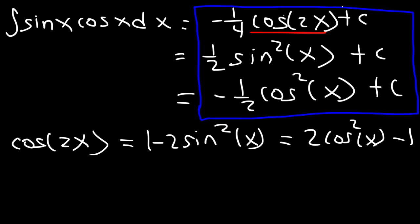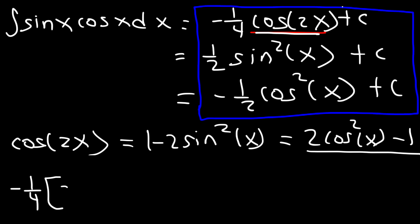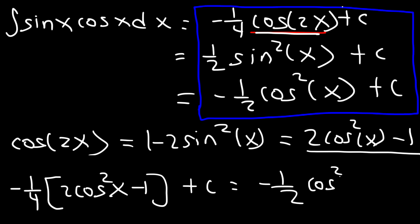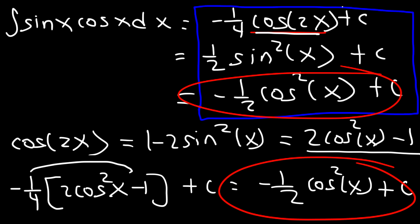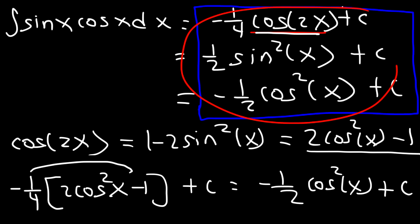Now let's replace cosine 2x with 2 cosine squared x minus 1. So instead of writing negative one-fourth cosine 2x, we insert that expression plus C. Negative one-fourth times 2 gives negative one-half cosine squared x, and negative one-fourth times negative 1 is positive one-fourth, plus the constant C. Since one-fourth plus a constant equals another generic constant, we get the same expression. So you can write the integral of sine x cosine x in any one of these three forms, because you can convert one form into another using the double angle formulas for cosine.